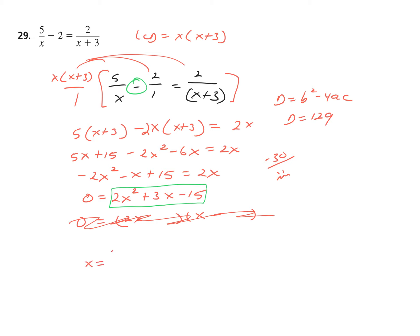X equals negative B plus or minus root D all over 2A, which in this case would be negative 3 plus or minus root 129 all over 4. There is no way you are going to get a zero denominator with either of those solutions because they're both irrational. So I'm just going to call it done. Everything else looks good. I think we've seen every variety before we move on to word problems — so we're done with the entire set. Tori out.